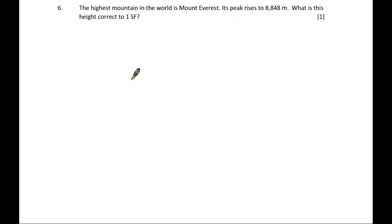Question six: The highest mountain in the world is Mount Everest. Its peak rises to 8,848 meters. What is this correct to one significant figure? The first significant figure starts with the first number that is not zero. In this case, the first significant figure is the eight.